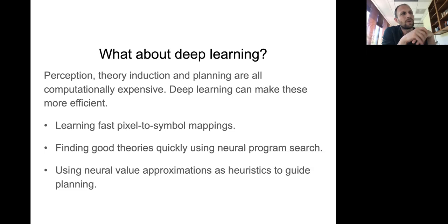So what about deep learning? I actually think that deep learning will be critical to making these kinds of approaches scalable, which currently they basically aren't. So every step in that architecture that I showed you could benefit from the pattern recognition and function approximation abilities of deep learning systems. For example, learning fast pixel-to-symbol mappings, finding good theories quickly using neural program search, using neural value function approximations as heuristics to guide planning like in AlphaGo. So I think all these things can and should be explored.